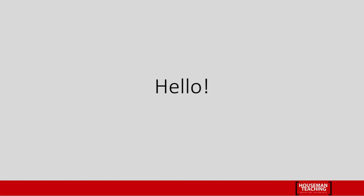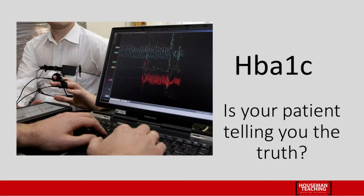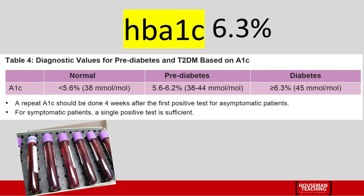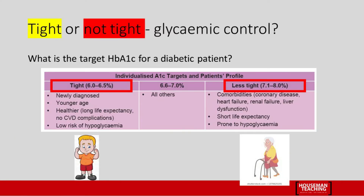Welcome to the Houseman Teaching Channel. Today we are going to talk about HbA1c — is your patient telling the truth? As mentioned in the previous video, HbA1c is used as a diagnostic test for diagnosing diabetes mellitus. An HbA1c above 6.3% is diagnostic for diabetes mellitus. HbA1c is also a way to measure sugar control in a diabetic patient. These are the numbers you need to memorize.